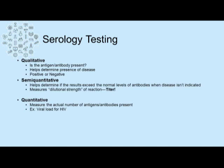Semi-quantitative testing helps determine results that exceed a normal level of antibodies when a disease is not indicated. A good example is the hepatitis B vaccine titer. Most people get their series of three hepatitis B vaccines when young and don't get them again. However, when working in a healthcare setting, you can opt for a titer, which measures the antibody concentration in your serum — this is a semi-quantitative serology test.